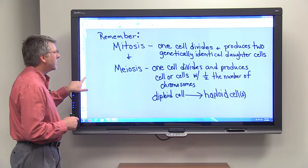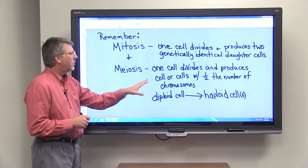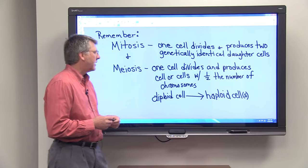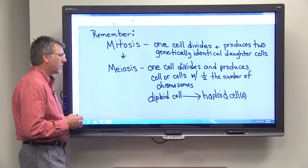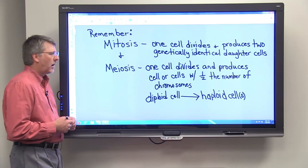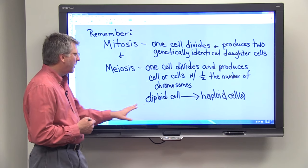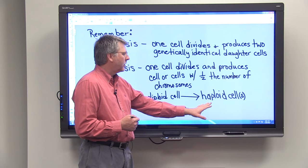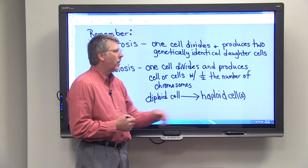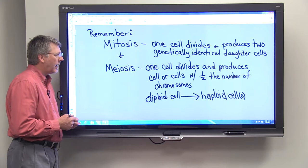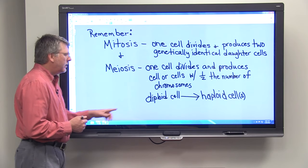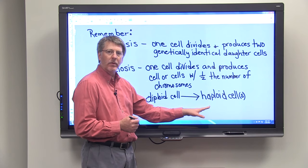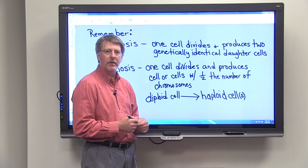Now meiosis is different in that one cell will divide and it will produce cells, but the daughter cells have half the number of chromosomes. We take a diploid cell and go through this process of meiosis and we wind up with cells that are haploid. Diploid cells have two copies of each chromosome whereas haploid cells have only one copy of each chromosome.